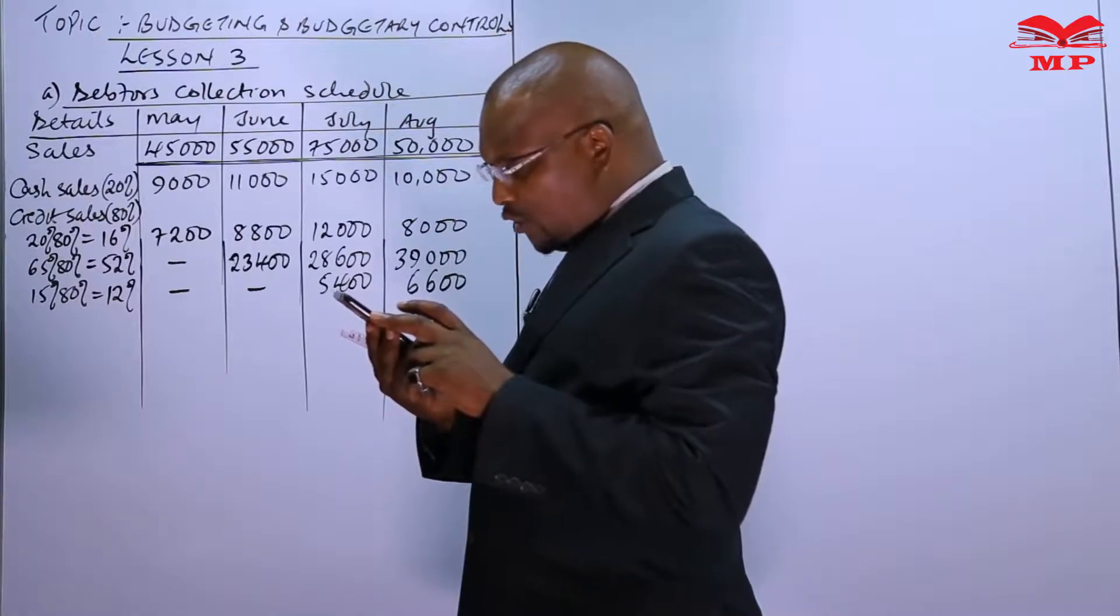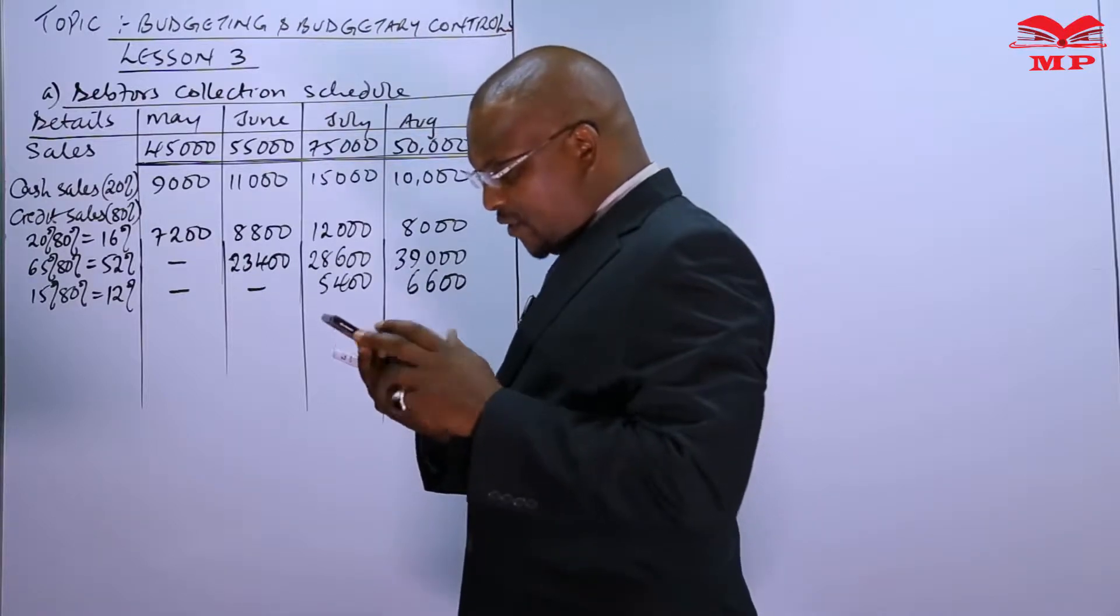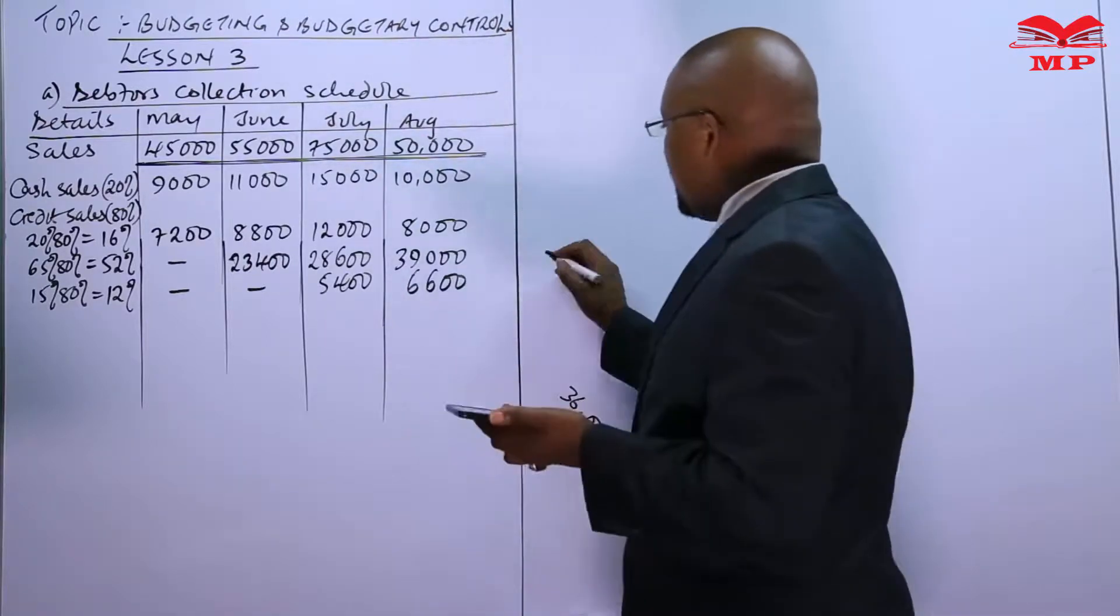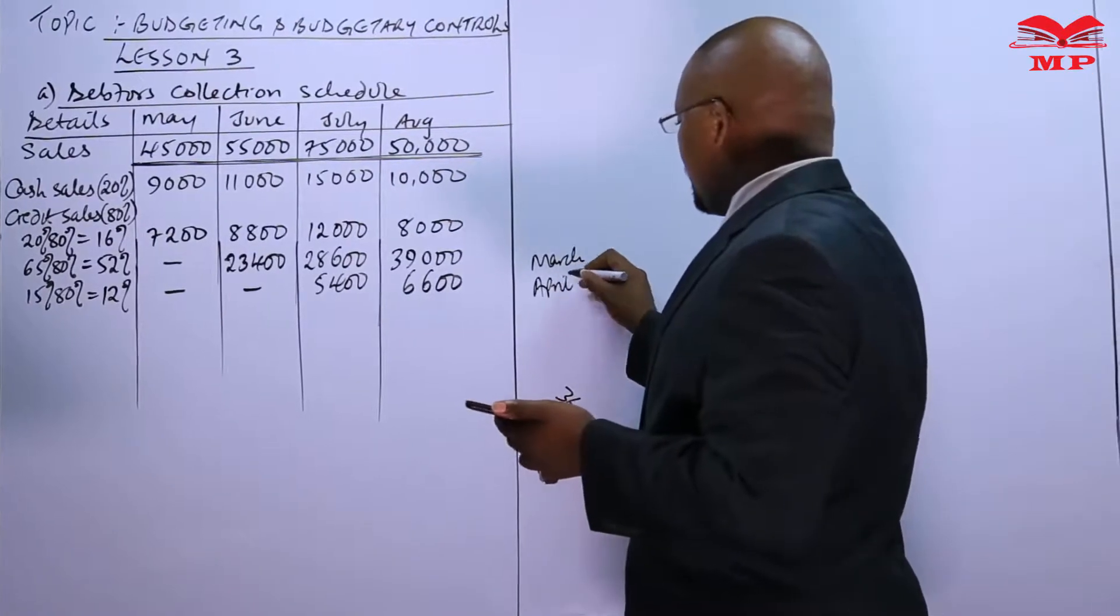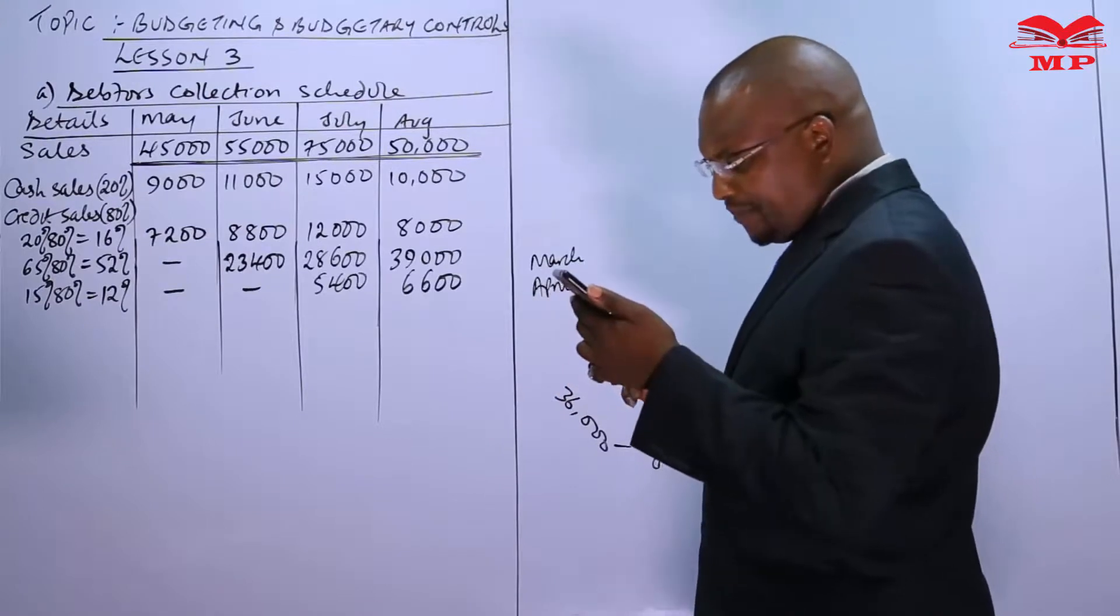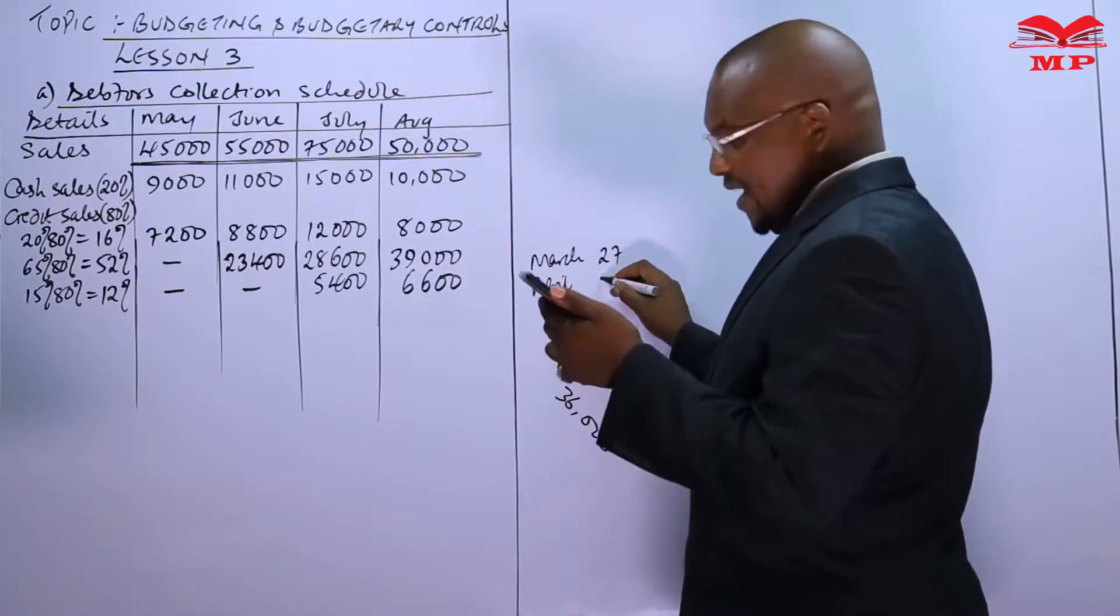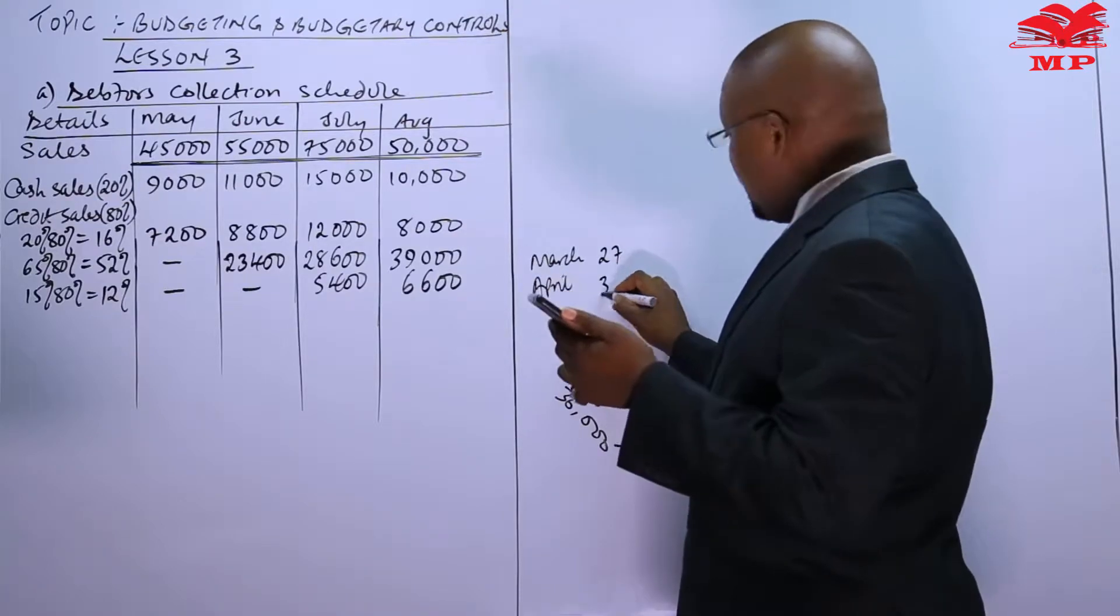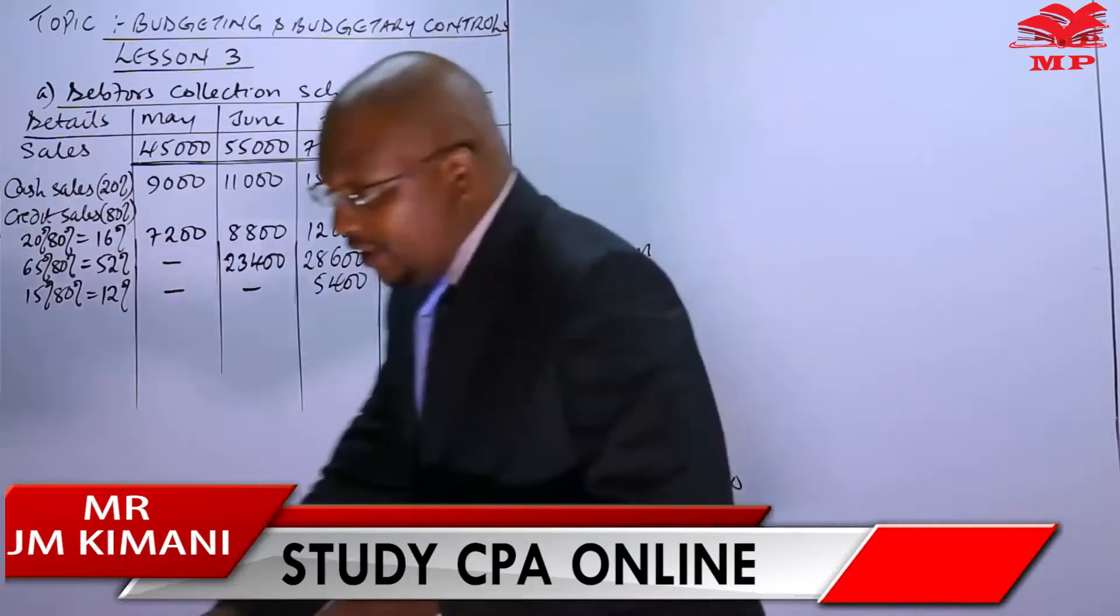Totaled to 27 million and 33 million respectively. So if the month of March and then April, if the month of March the sales are actually 27 million and this one is 33 million, and this is actually sales.